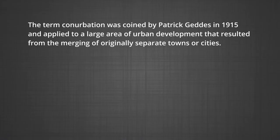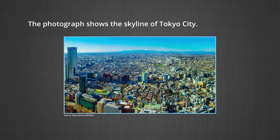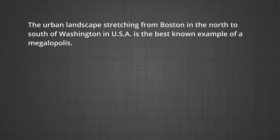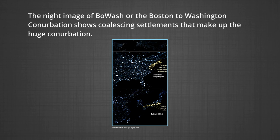Conurbation: The term conurbation was coined by Patrick Geddes in 1915 and applied to a large area of urban development that resulted from the merging of originally separate towns or cities. Greater London, Manchester, Chicago, and Tokyo are examples of conurbations. Megalopolis: This Greek word meaning 'great city' was popularized by Jean Gottman in 1957 and signifies a super-metropolitan region extending as a union of conurbations. The urban landscape stretching from Boston in the north to south of Washington in the USA is the best-known example of a megalopolis, known as BosWash.